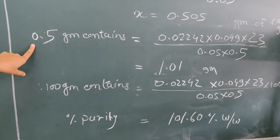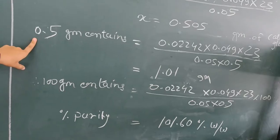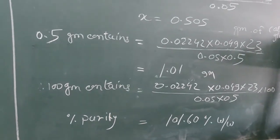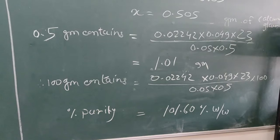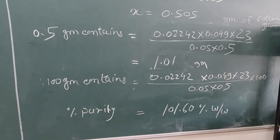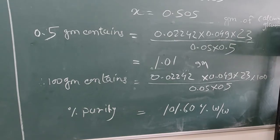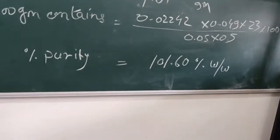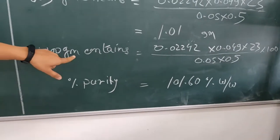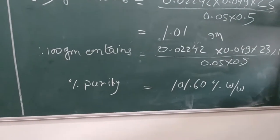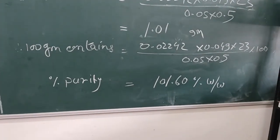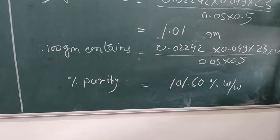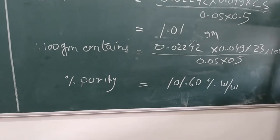Now, for assay, we weighed 0.5 grams of calcium gluconate. So, 0.5 grams contains 0.02242 into 0.049 into 23 divided by 0.05 into 0.5. So, answer is 1.01 grams. So, 0.5 grams contains 1.01 grams of calcium gluconate. Now, we have to calculate percent purity. That means 100 grams contains 0.049 into 23 divided by 0.05 into 0.05. So, percentage purity is 101.60% weight by weight of calcium gluconate.